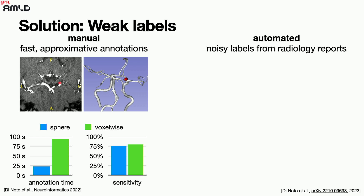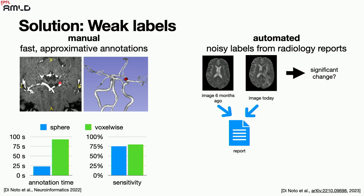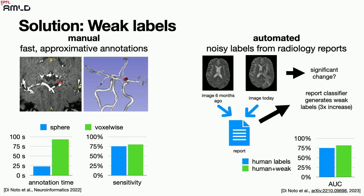A second solution is to leverage radiology reports. You can generate labels automatically that are not perfect but are free. For glioma progression, you follow patients with brain cancer every six months. You ask radiologists whether the change was significant — progression or response to treatment — and you also have a report. Using very basic NLP you can train a classifier from the text on whether there was a change. Because you have reports for all retrospective data, you can increase your dataset size by threefold. Training on human labels plus these weak labels gives a slight improvement, and we're confident this can scale.